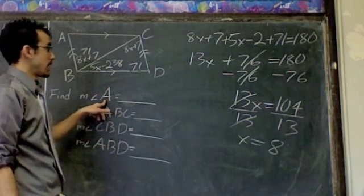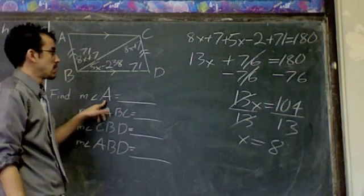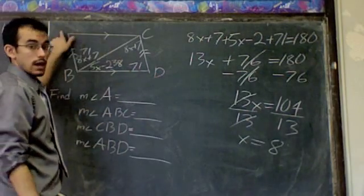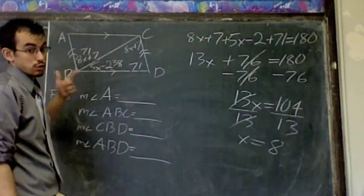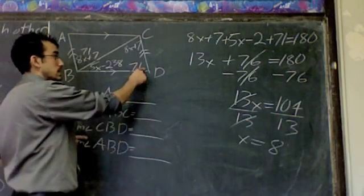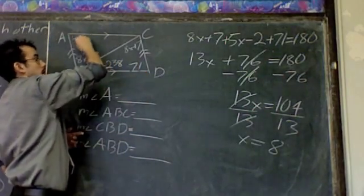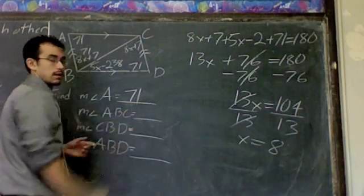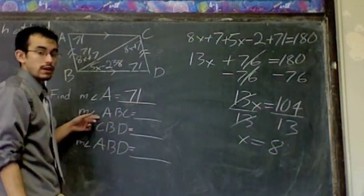So when I ask you for the measure of angle A, you can get that. Because D and A are opposite angles, which you should remember, are congruent. So D is 71, A is 71.